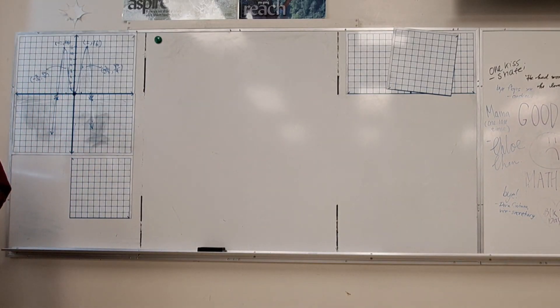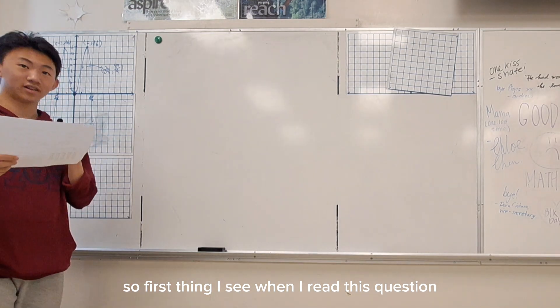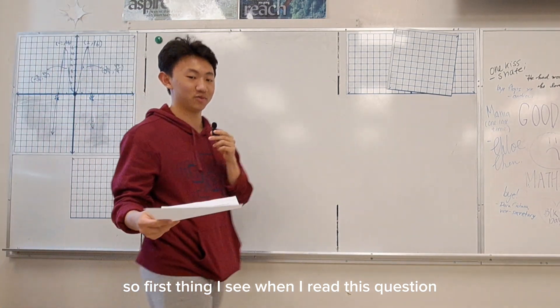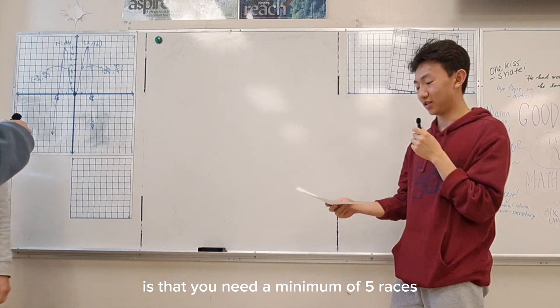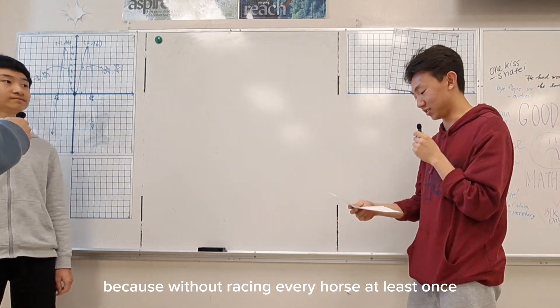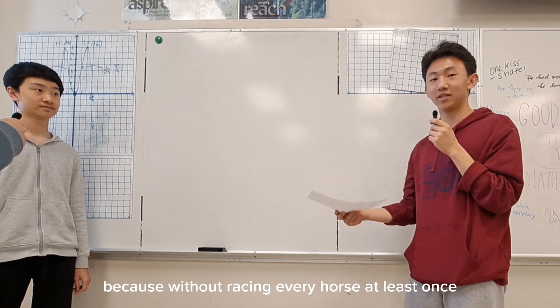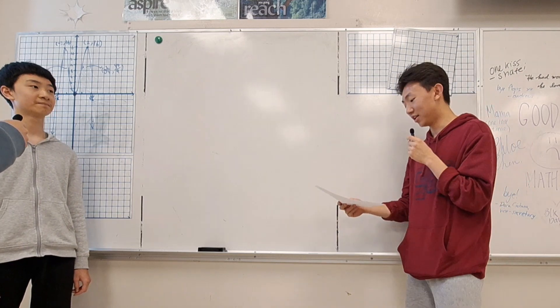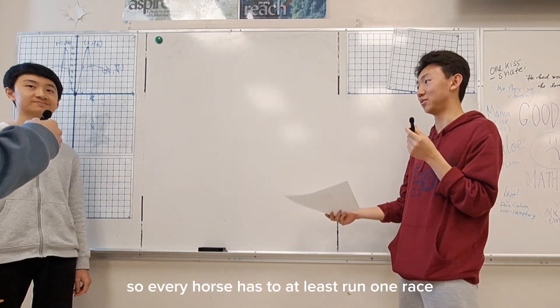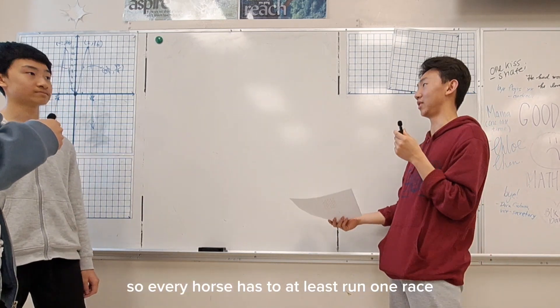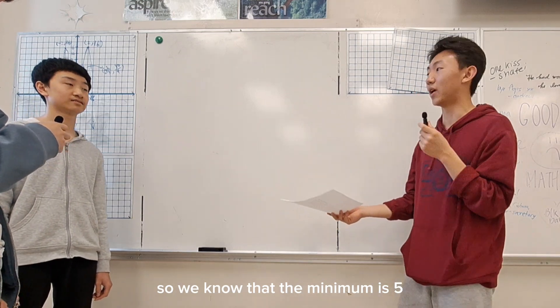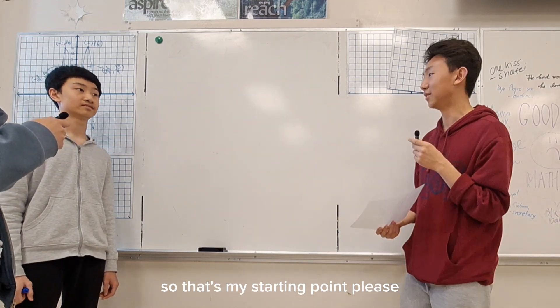Interesting problem. So the first thing I see when I read this question is that you need a minimum of five races because without racing every horse at least once, you don't know which one's the fastest. So every horse has to at least run one race, so we know that the minimum is five. That's my starting point.